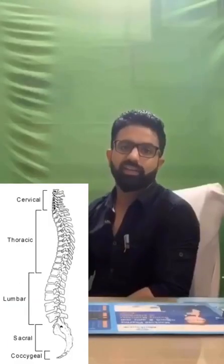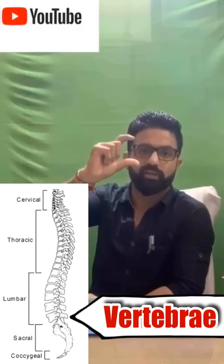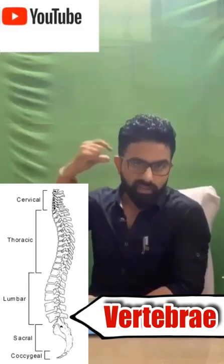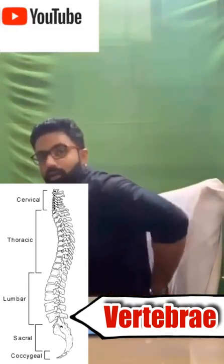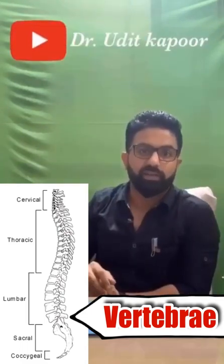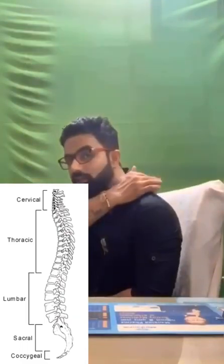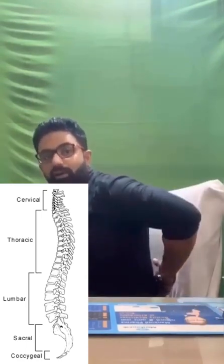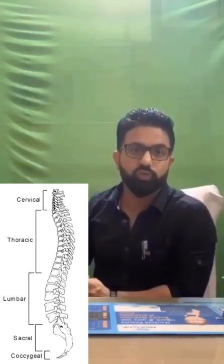So let's start with the anatomy of the spine first. There are 33 vertebrae — bony structures which cover from the cervical region to the lower back. There are 7 in the cervical region, 12 in the thoracic, 5 in the lumbar, 5 in the sacrum, and 1 coccyx which is a fused one.